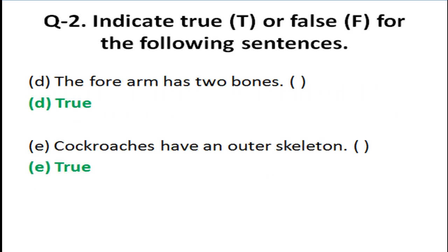Next true or false: the forearm has two bones. The answer is true. Next: cockroaches have an outer skeleton. The answer is also true.